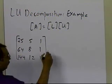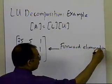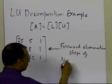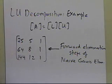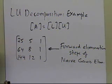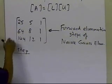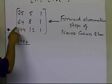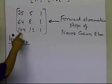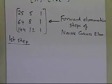What we're going to do is perform the forward elimination steps of the Naive Gaussian method on this matrix. We're following the Naive Gaussian method forward elimination steps to find the L times U decomposition. In the first step, you want to take the first row and make the entries below it in the first column equal to zero, to convert the matrix into an upper triangular matrix.